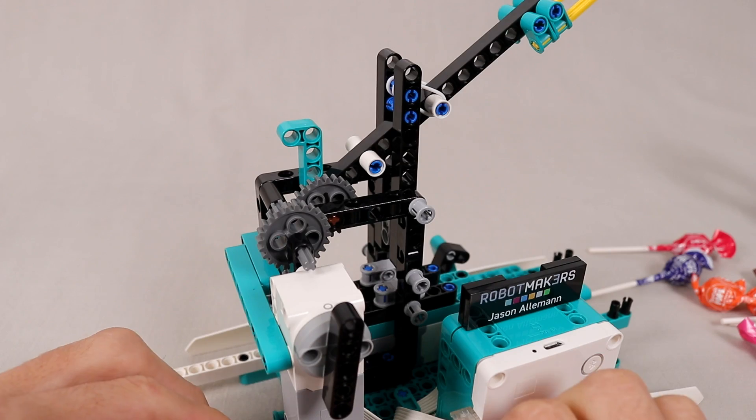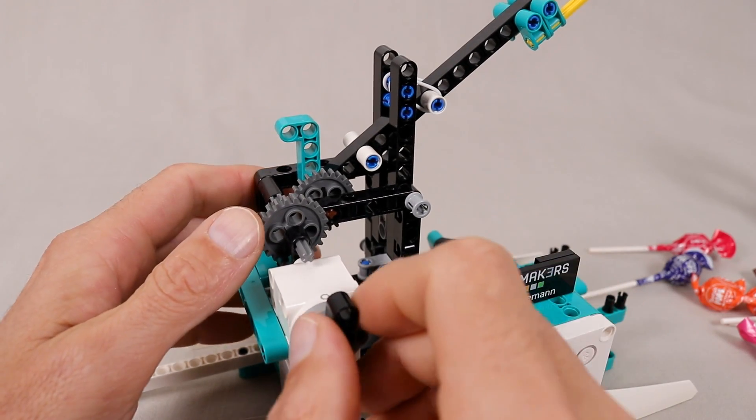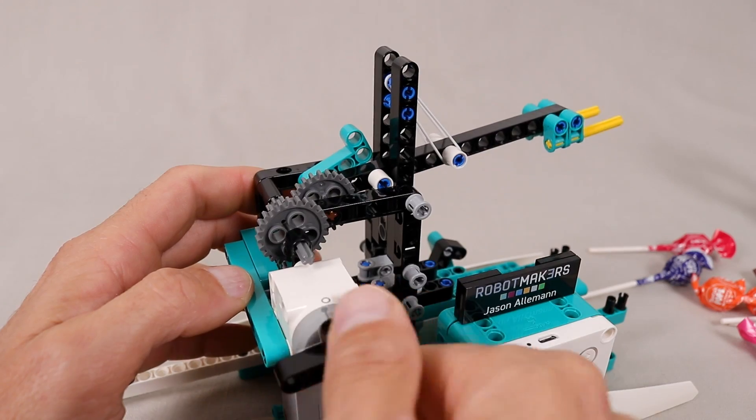To prime the catapult arm, this motor is used to drive this lever which pushes the arm down into the launch position.